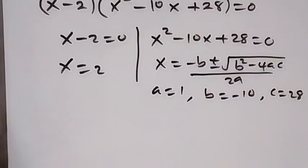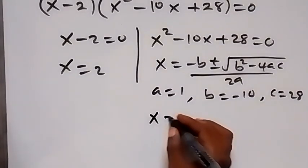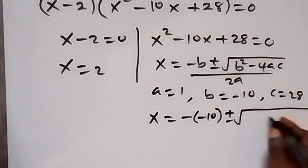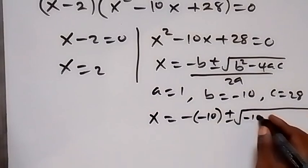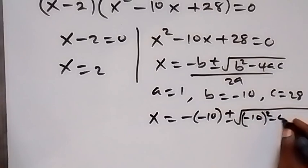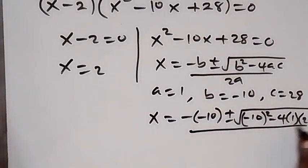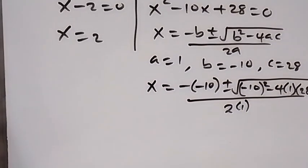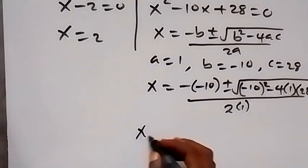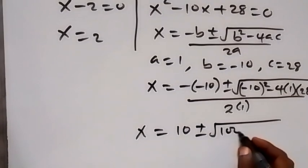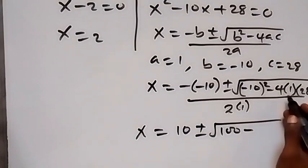Substituting, we have x equals minus negative 10, plus or minus square root of b squared, that's negative 10 squared, minus 4 times a, that's 1, times c, that's 28, divided by 2 times a, that's 2 times 1. So x equals 10 plus or minus square root of 100 minus 112, all divided by 2.